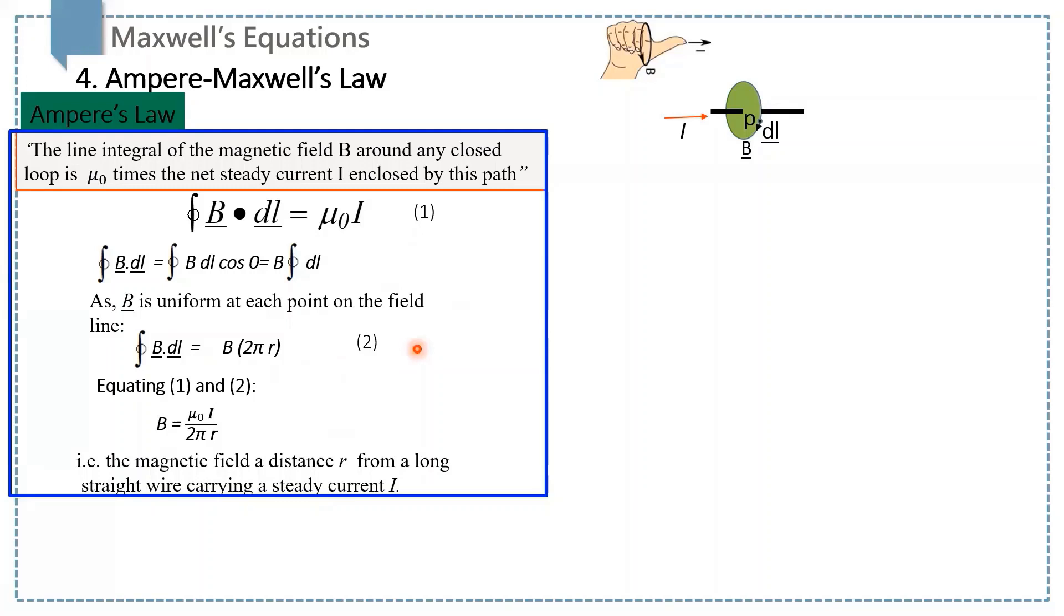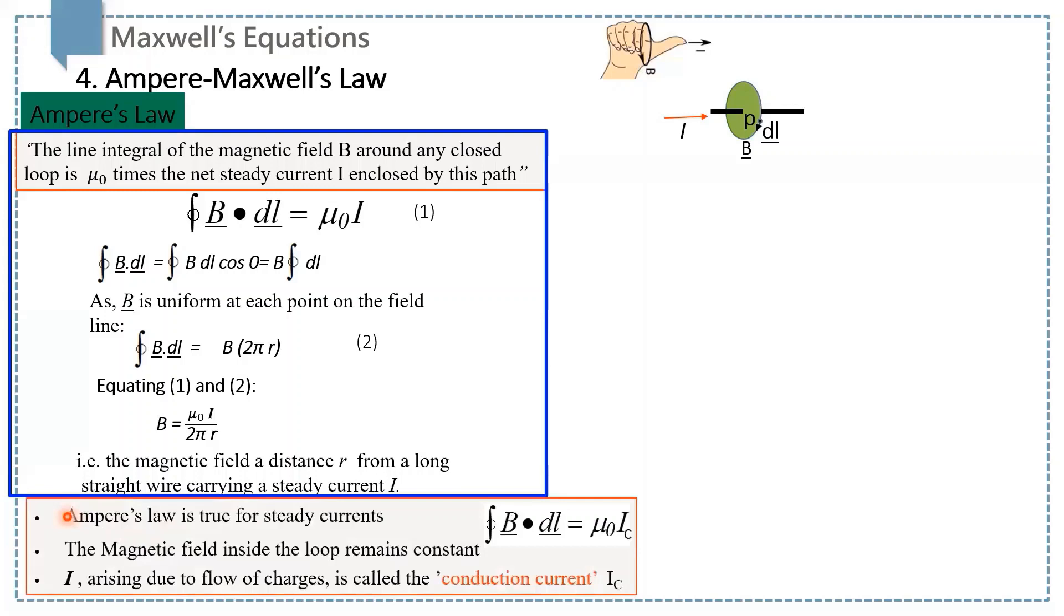The conclusion is that Ampere's law is only true for steady currents. The second is the magnetic field inside the loop remains constant. This current i, which is arising due to the flow of charges, is called the conduction current with symbol ic, so we replace i with ic to show that we are talking about the conduction current.